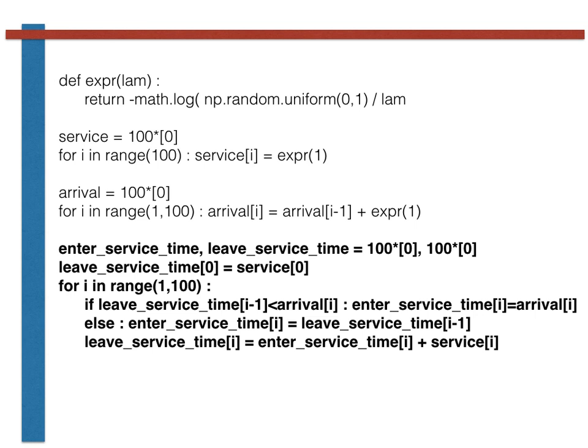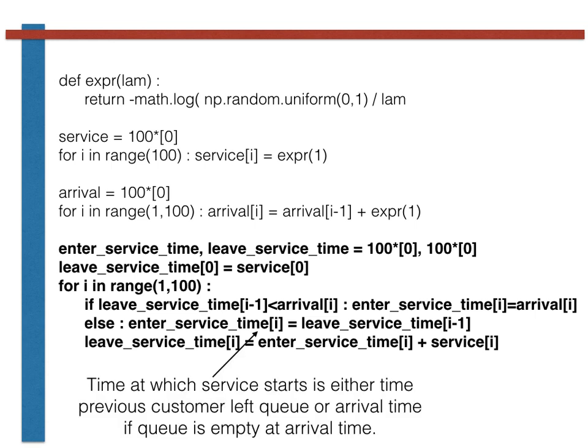The code shown in bold on this slide shows how these enter service and leave service times are calculated in practice. As you can see, the first person enters service at time t equals 0 and leaves after service 0 minutes later for the reasons discussed moments ago. The time at which the next customer starts getting served is then either the time that they show up at the checkout desk, arrival i, or the time that the previous customer is being done with service, leave service time i minus 1. Furthermore, for the reasons discussed on the previous slide, it is the larger of these two numbers.